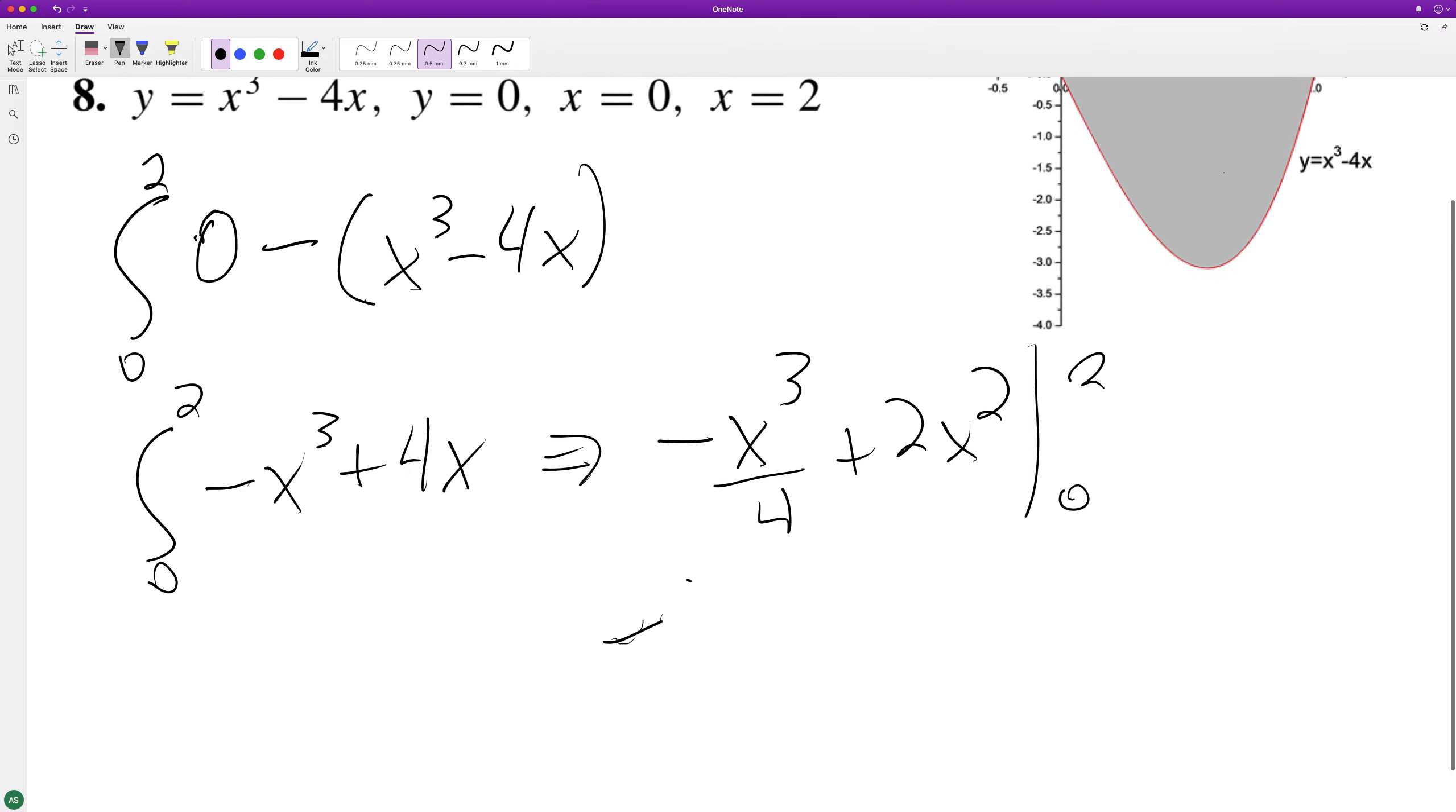So when we plug in 2 we get negative 8 over 4 plus 2 times 2 times 2. That's 8. So this is negative 2 and then we have 0 plus 0.